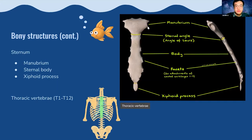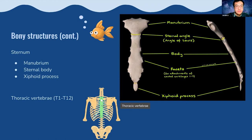The sternum has the manubrium at the top, the sternal body, and the xiphoid process at the inferior end. Where the manubrium and sternal body join is the sternal angle, also called the angle of Louis. There are facets for rib joints on the sternum. The thoracic cage is completed posteriorly by the T1 to T12 thoracic vertebrae, which form its posterior border.